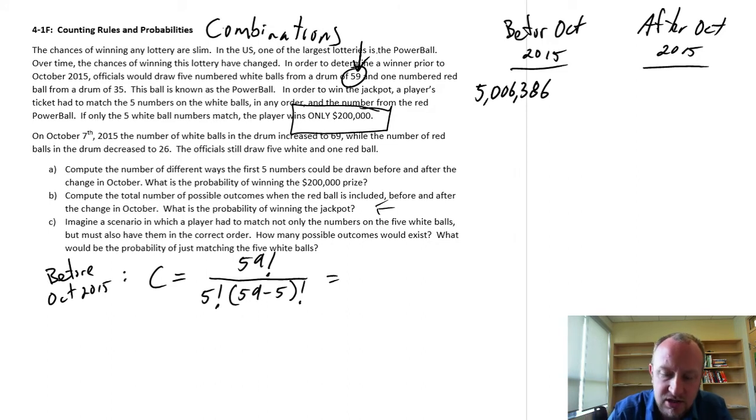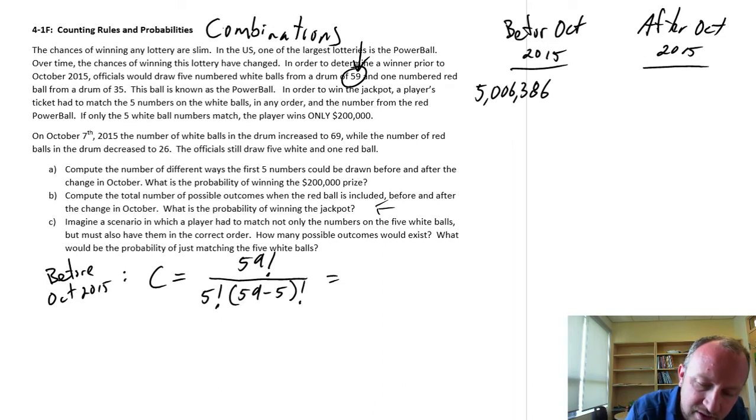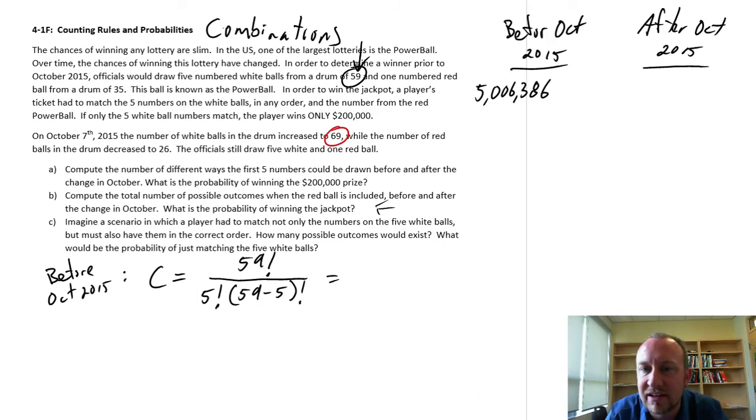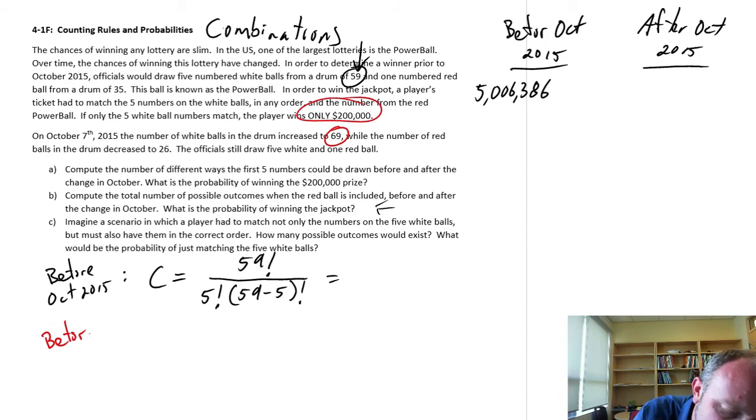After the change, so then in October 2015, let's see, they've increased the number of balls from 59 to 69, so how does this change our probability of winning this $200,000 prize? So this is after now, after October 2015.